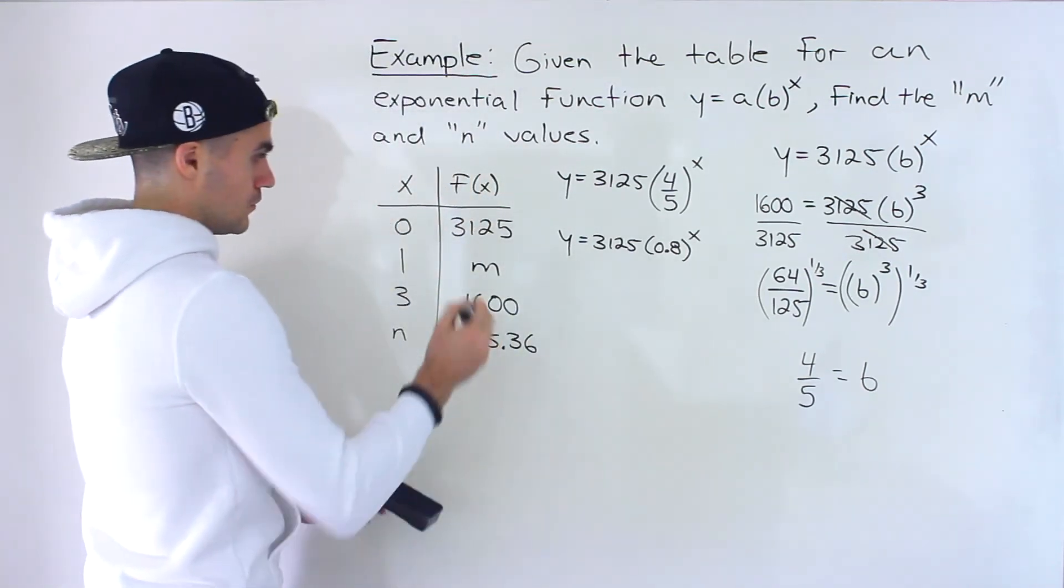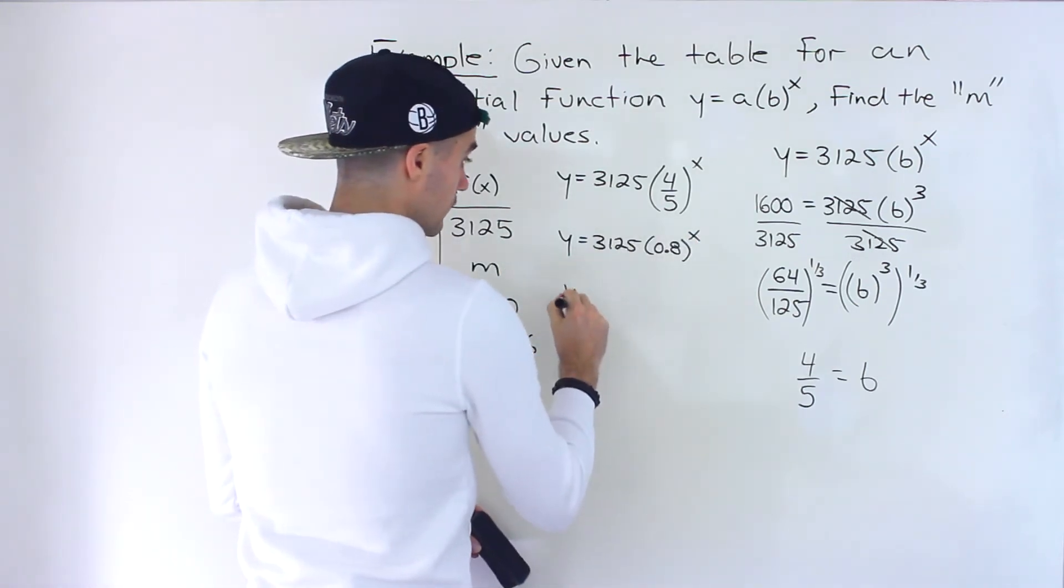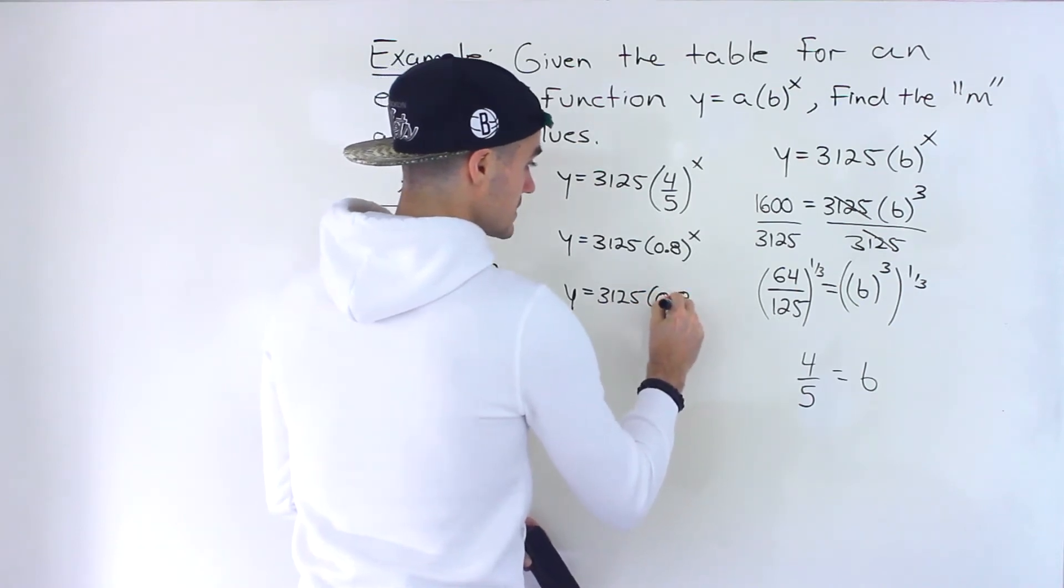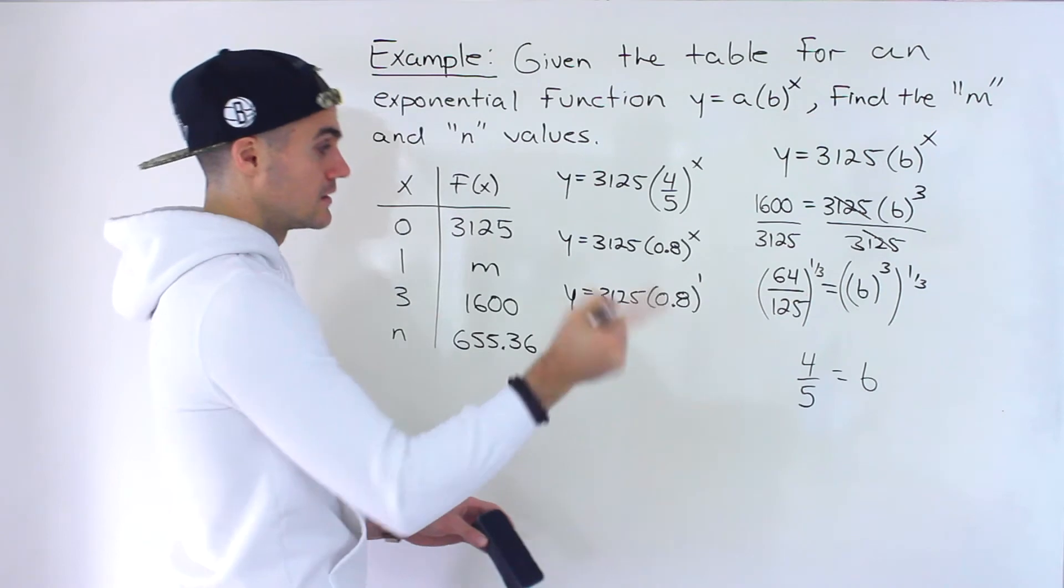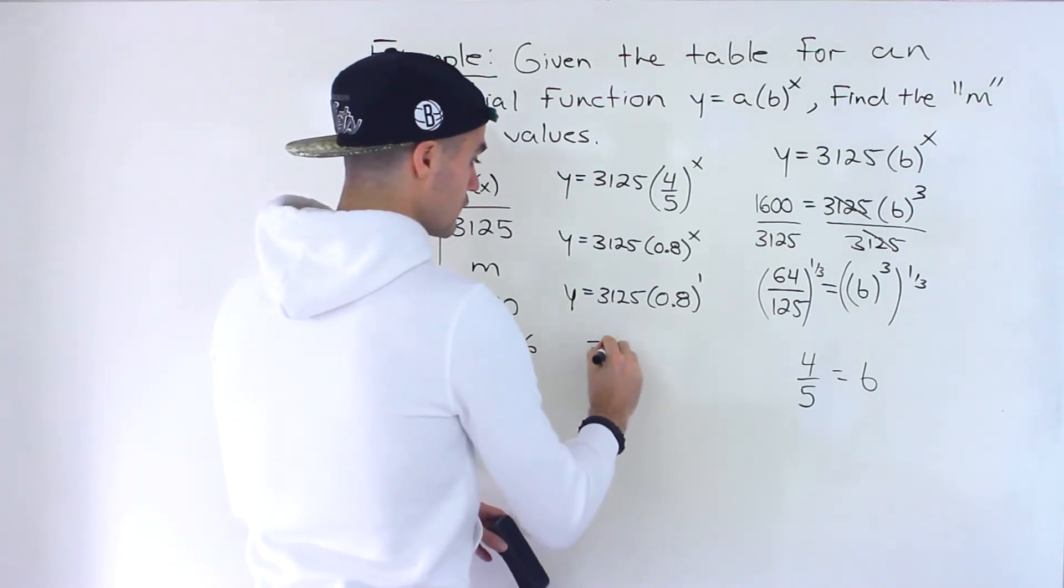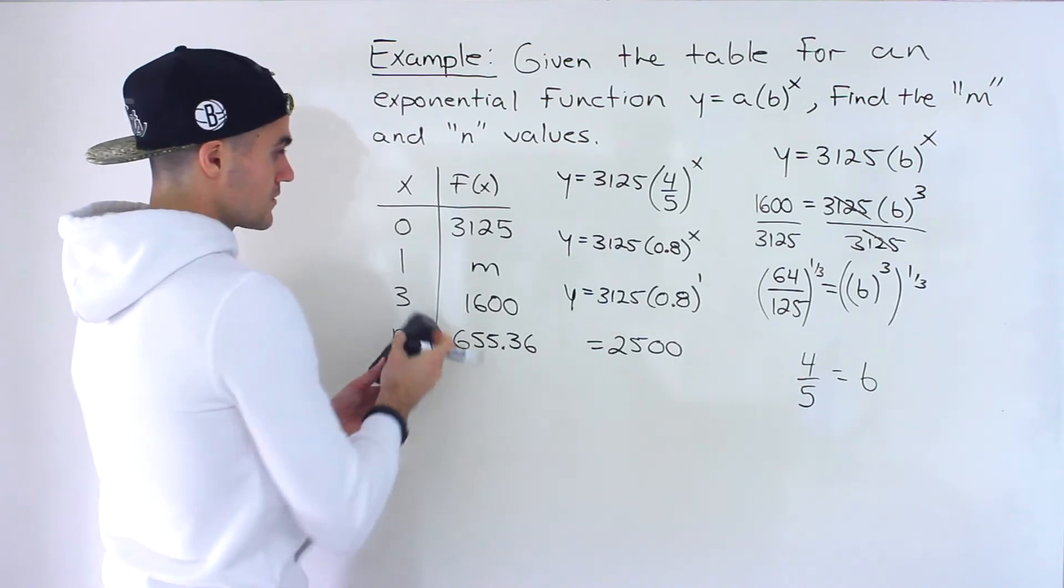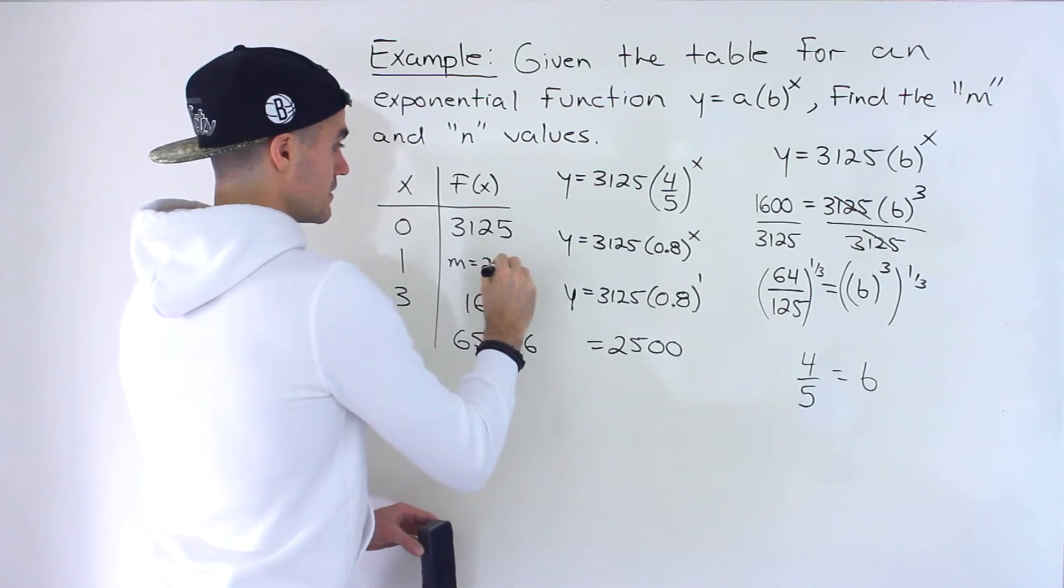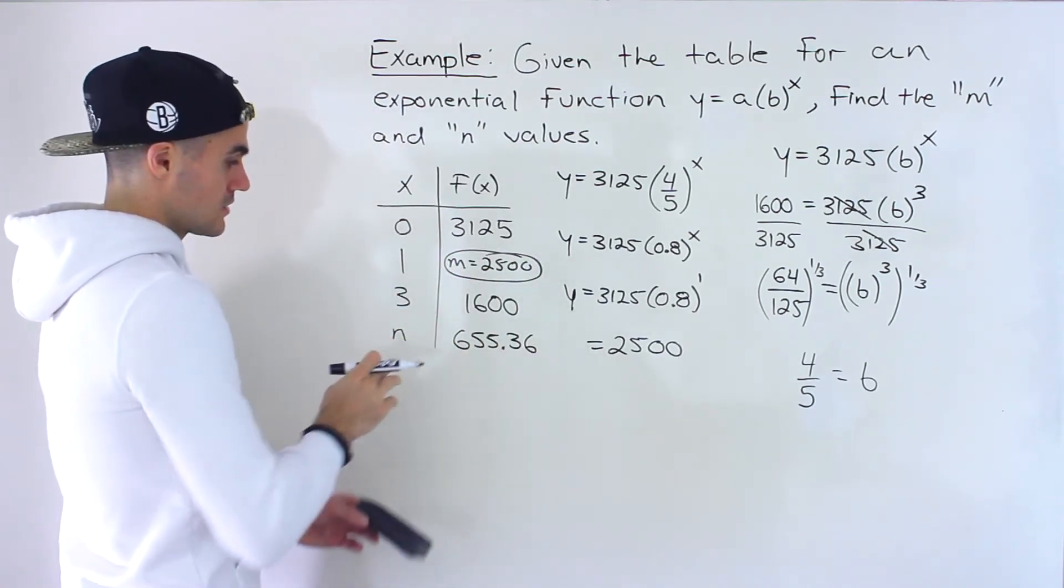So from here, we could find first this m value. Plug in an x value of 1. So we'd have y equals 3,125, 0.8 to the power of 1. 0.8 to the power of 1 is just 0.8 times 3,125 gives us 2,500. So this m value here, it's 2,500. So that's part of the answer.